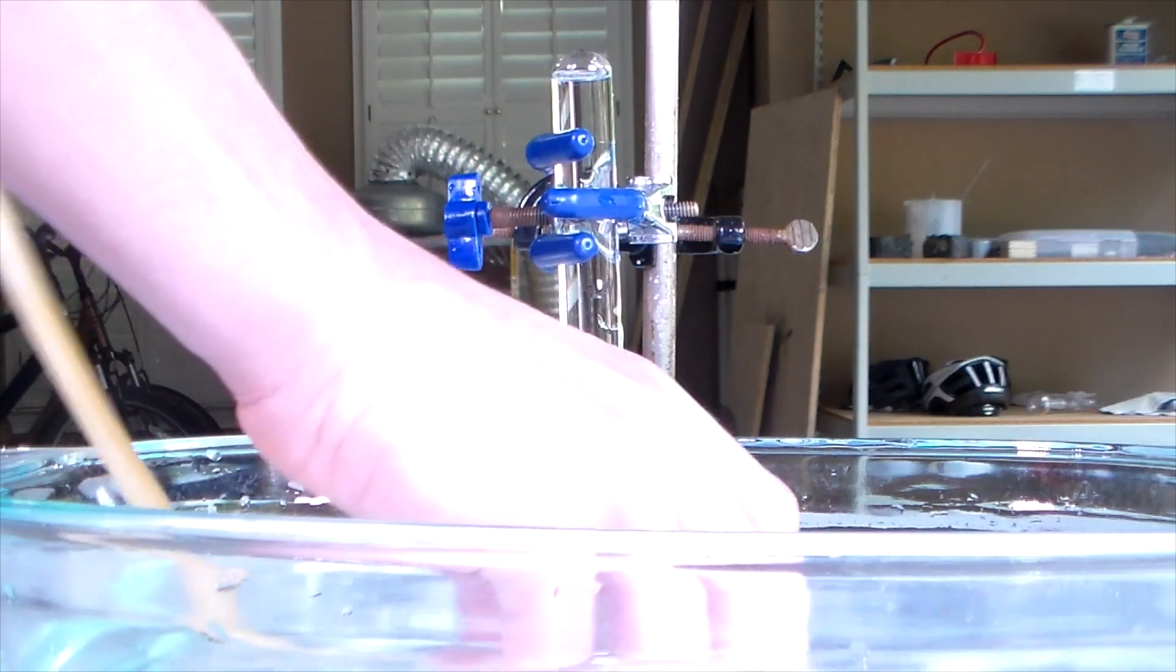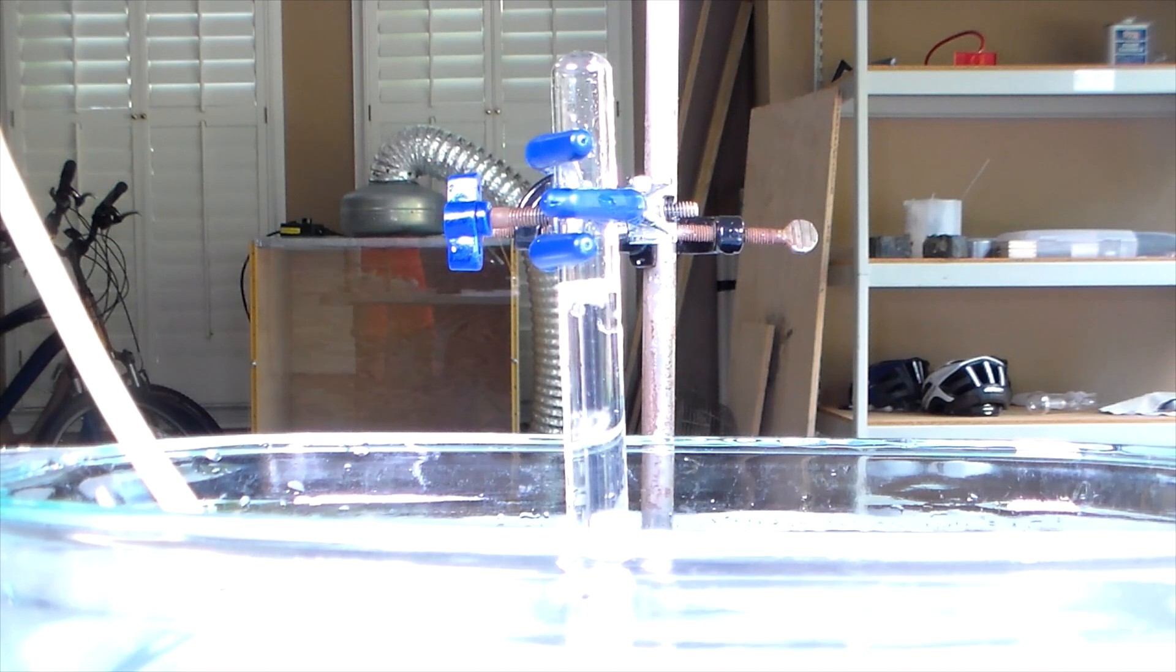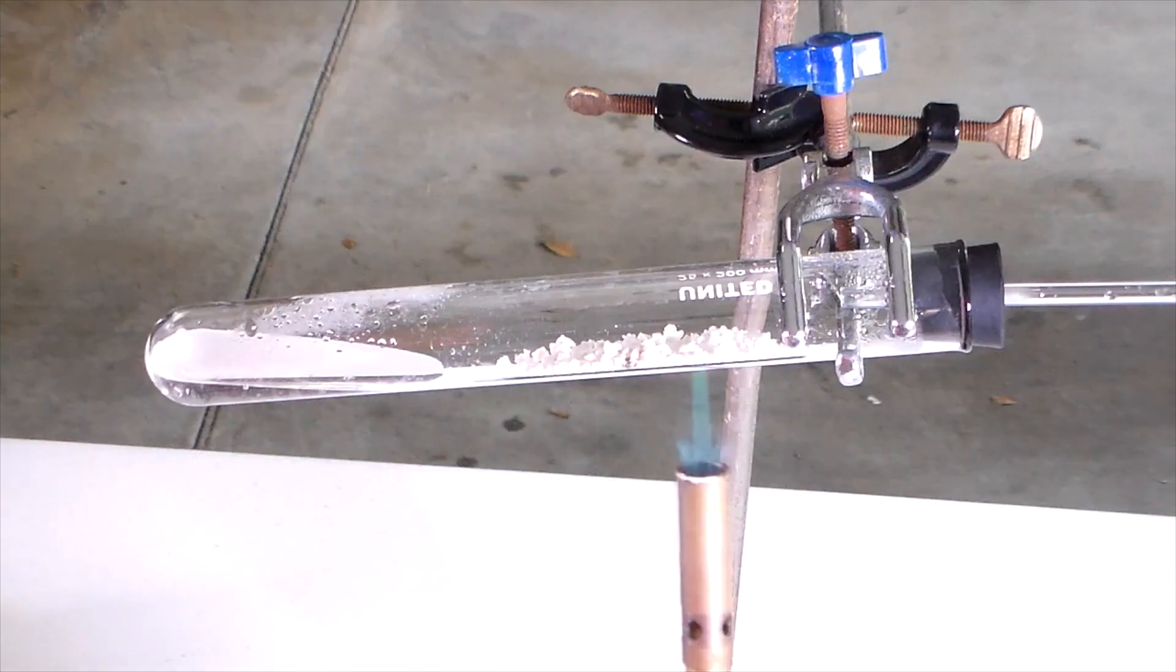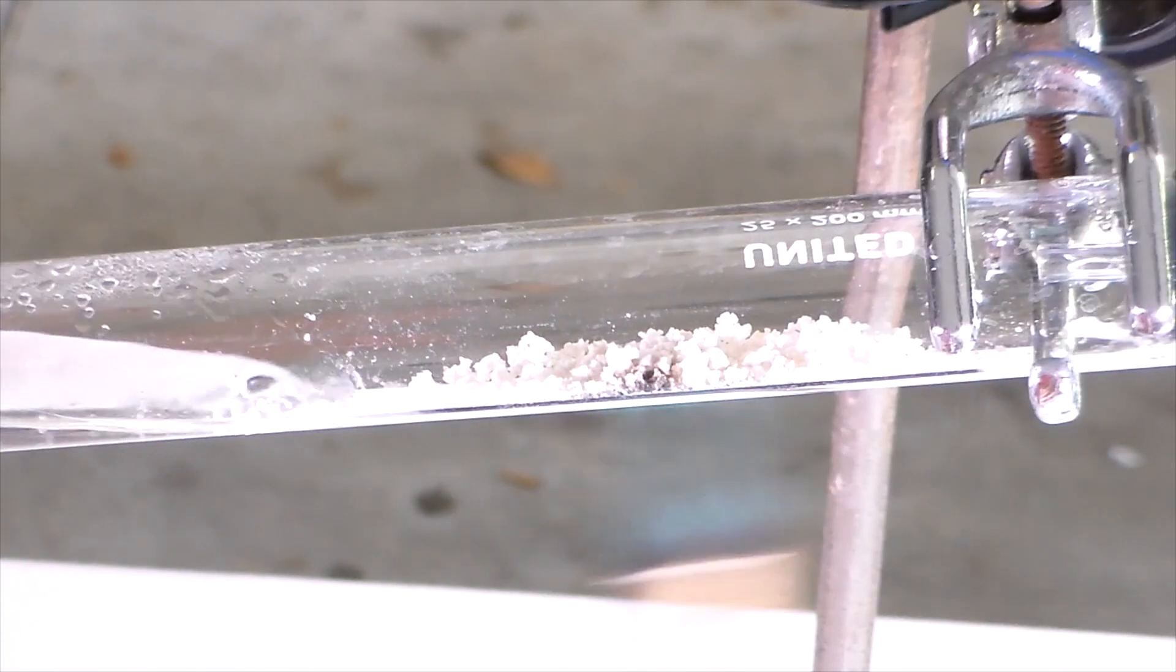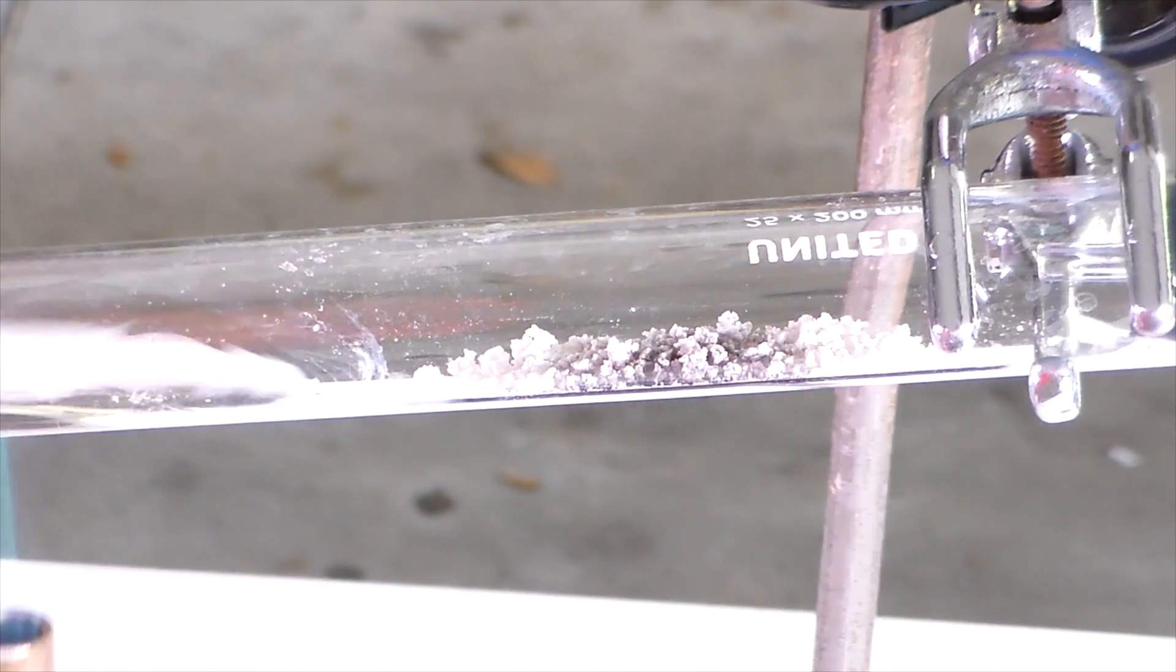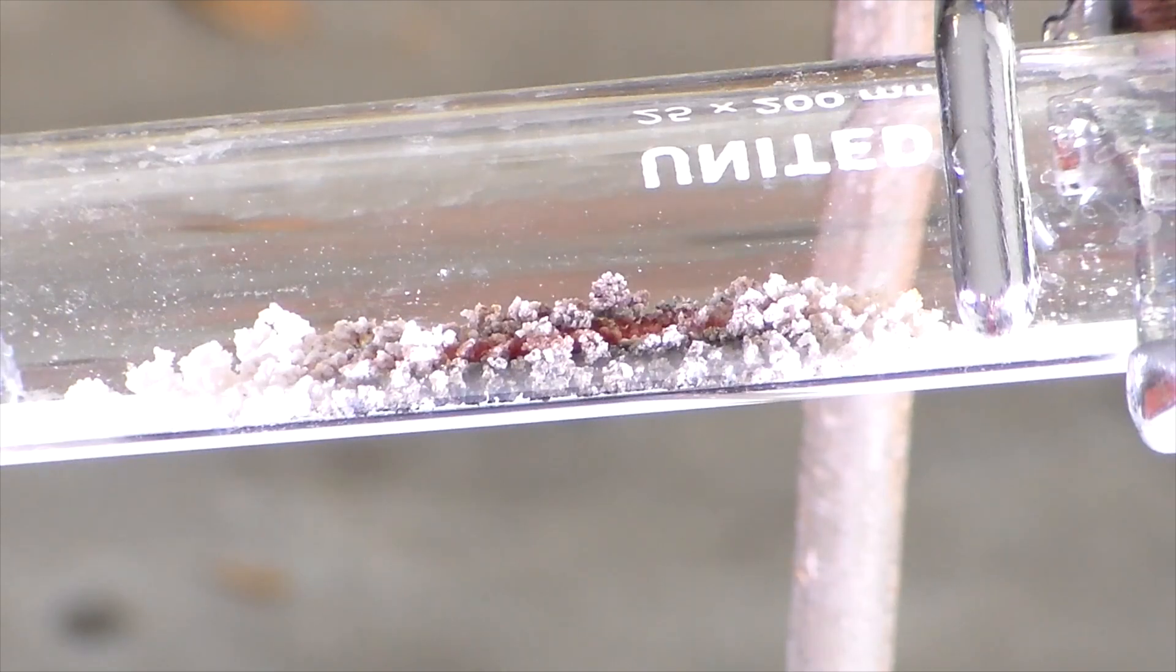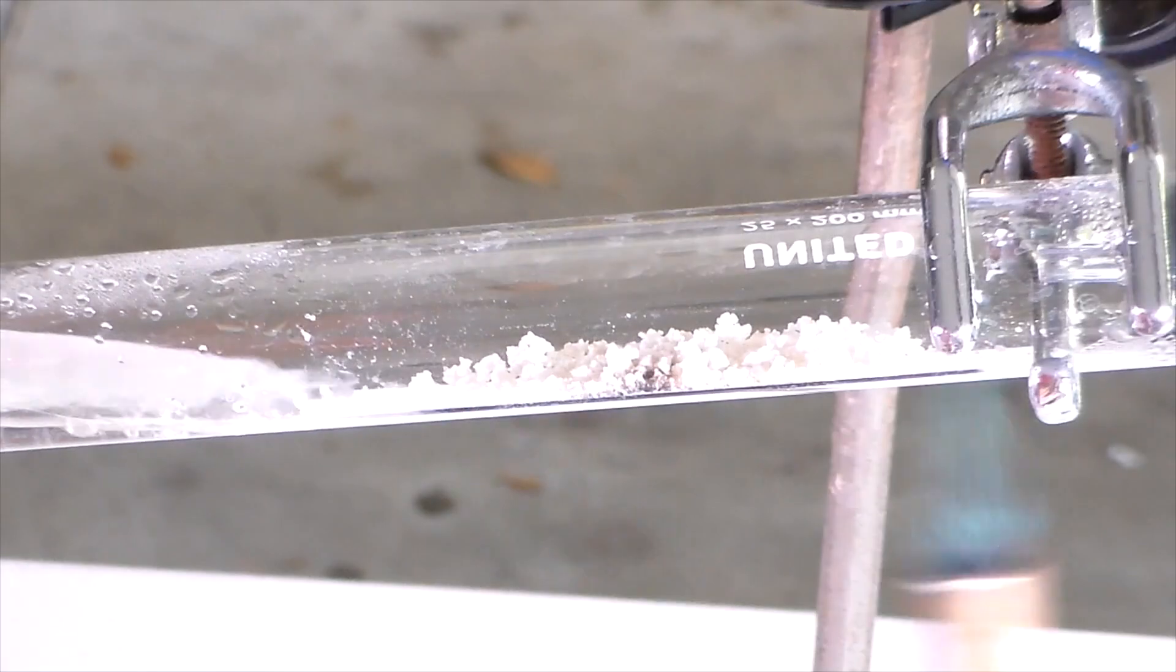Once you smell ethene, insert the plastic tube into the inverted test tube and collect the gas. An interesting side note is that the aluminum oxide catalyst turns black as the reaction progresses. I actually don't know why this is, and any suggestions in the comments would be pretty helpful.